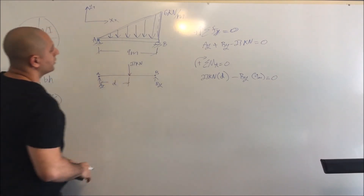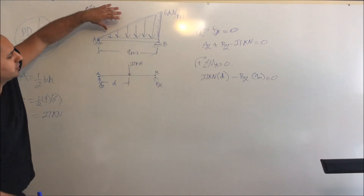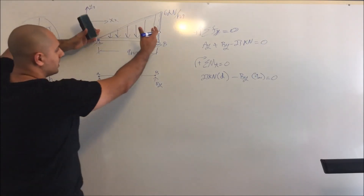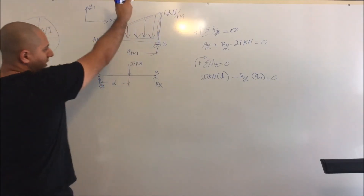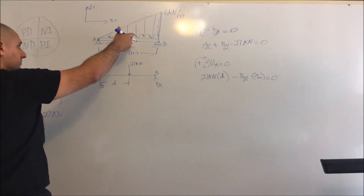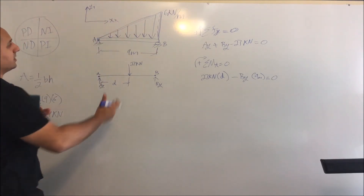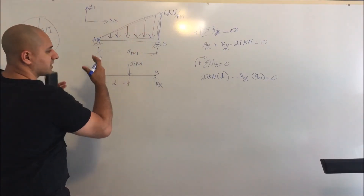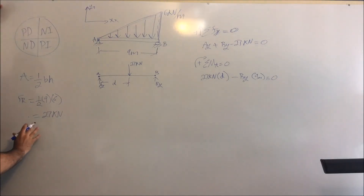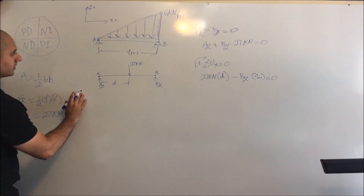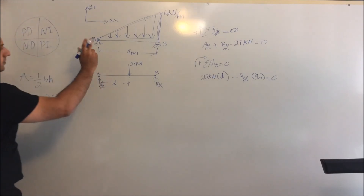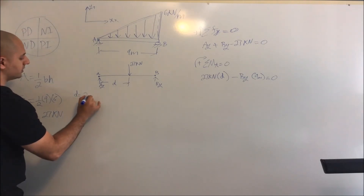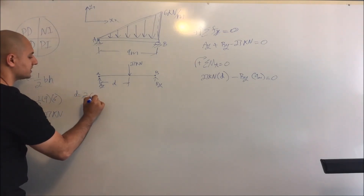We need to find this distance. Going back to the distributed load shape — this is not a rectangle. If it were a square or rectangle, the resulting force would act in the middle. But for a triangle it's not centered. The given formula for the location is: d equals two-thirds times x.